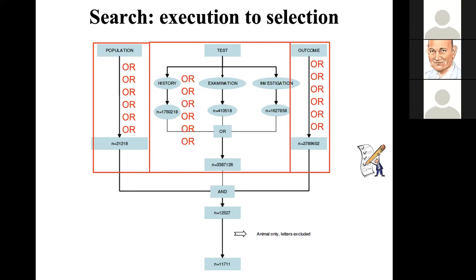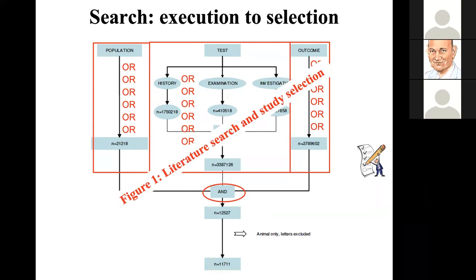These terms are all combined with AND, and ultimately after excluding animal studies and others not relevant to our question, we have over 11,000 citations at the bottom of the figure. This information needs to be presented as Figure 1 in your published paper.